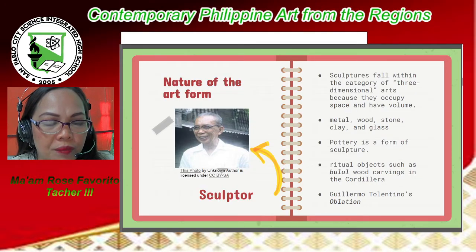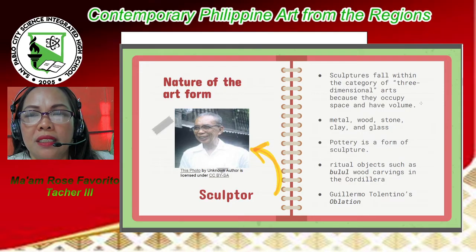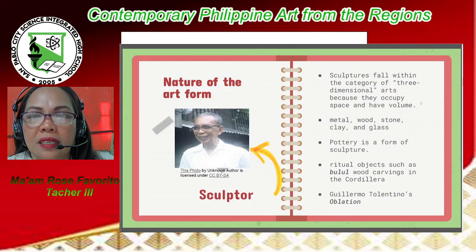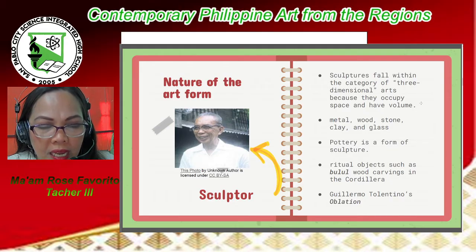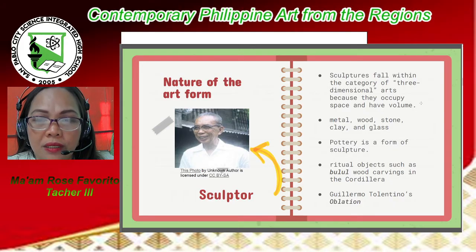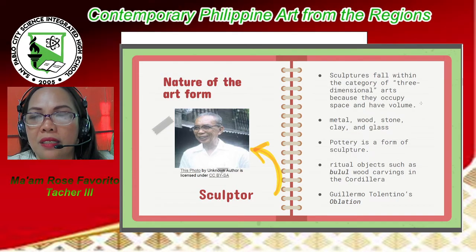The medium also defines the nature of the art form. Here are the different natures of art form. Number one is sculpture. Sculptures fall within the category of three-dimensional arts because they occupy space and have volume. They use metal, wood, stone, clay, and glass. Pottery is a form of sculpture. There are also ritual objects such as bulul wood carvings in the Cordillera. Other examples are nudes and figures such as Michelangelo's works, and santos or carvings of saints in different Christian churches.